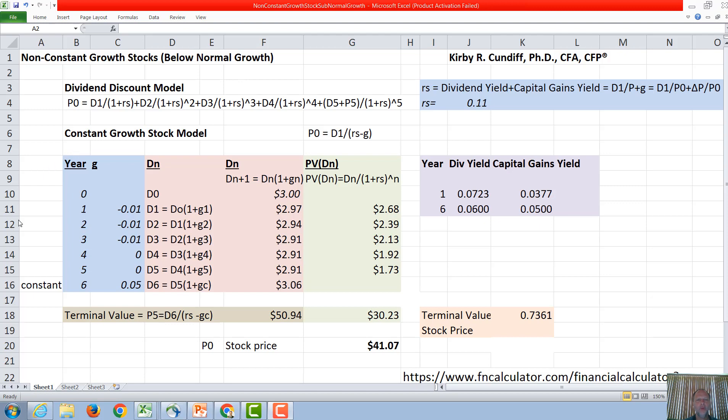In our example, we're going to consider a stock initially paying a dividend of $3, but that dividend is going to decrease for several years as the economy enters a recession and our company is not doing well. So the dividend is going to decrease by 1% every year for three years, then be stagnant for two years, and then recover relatively quickly at a 5% growth rate.